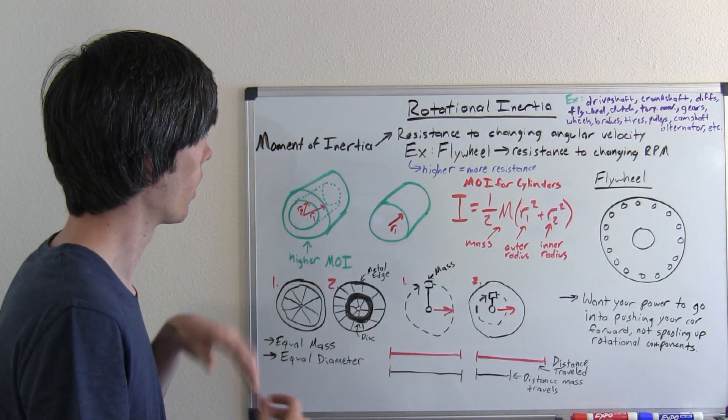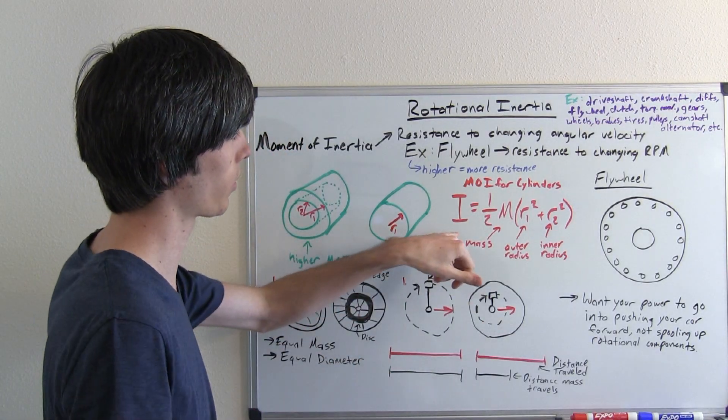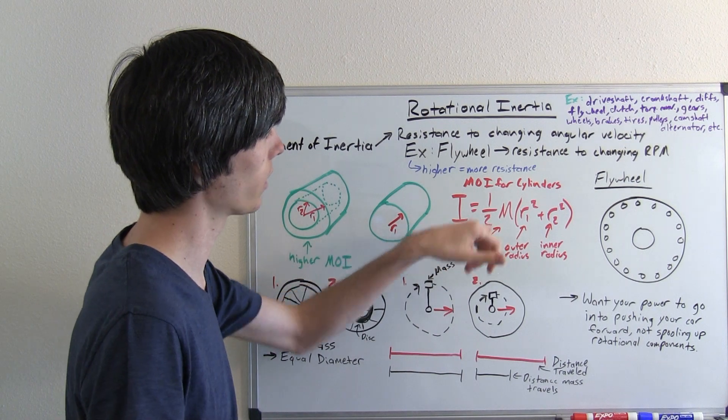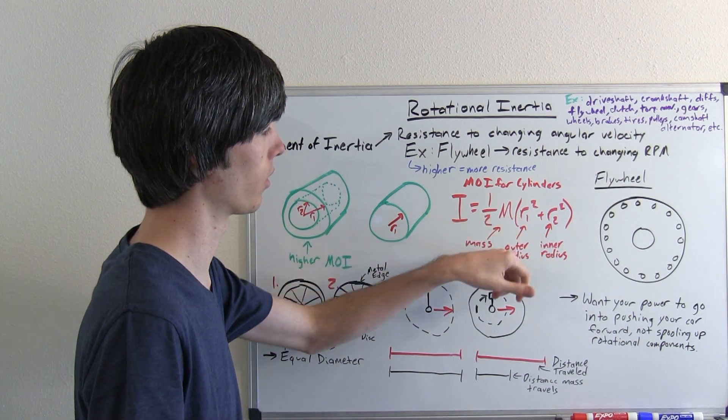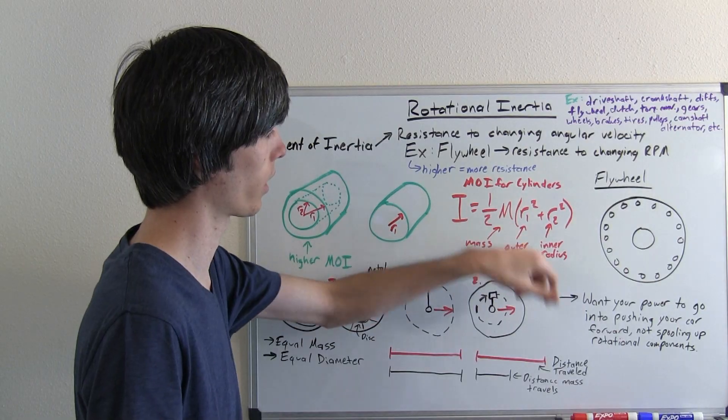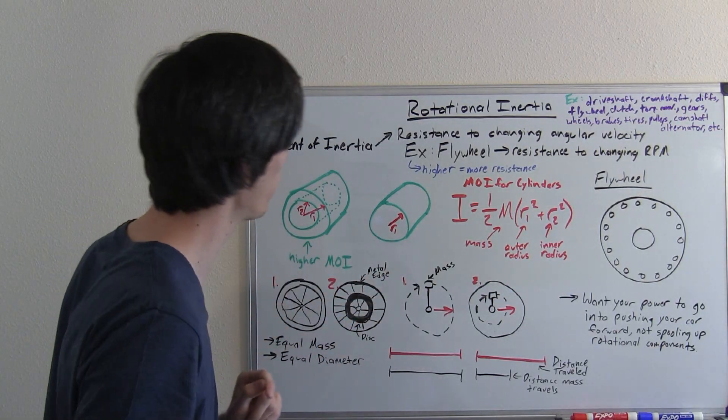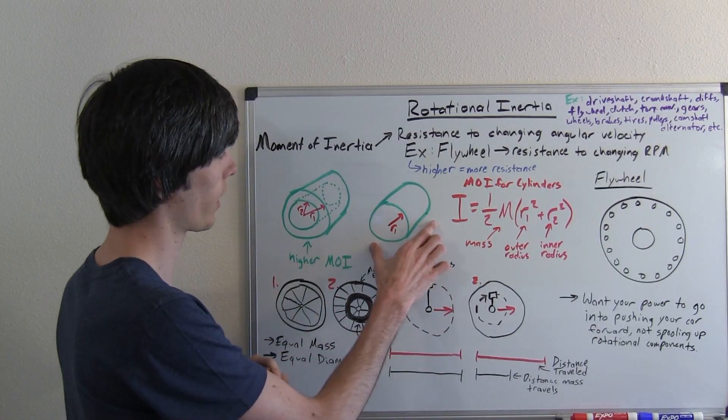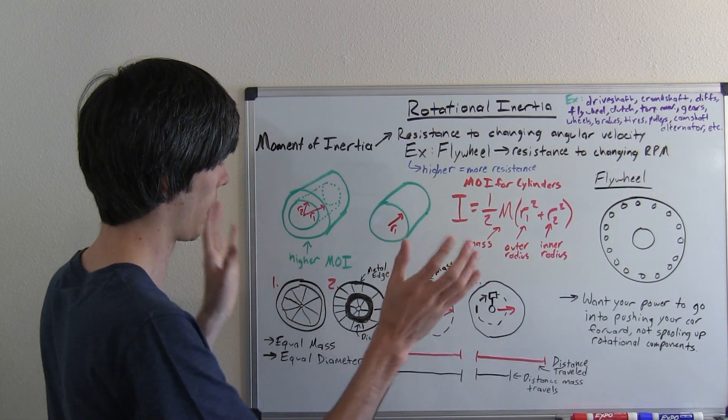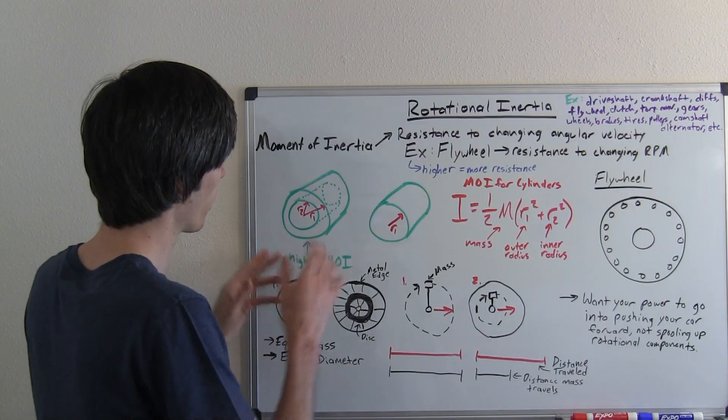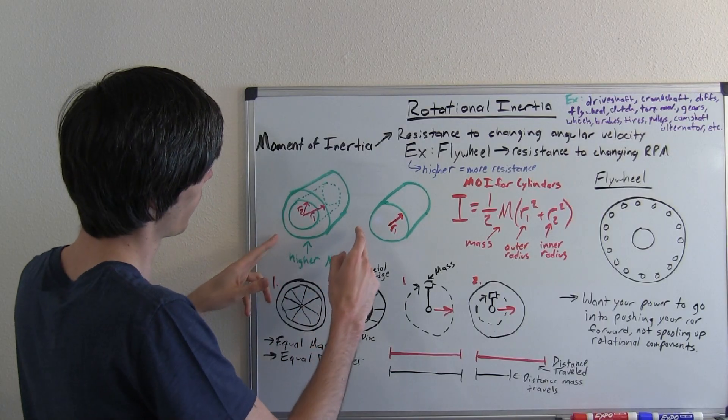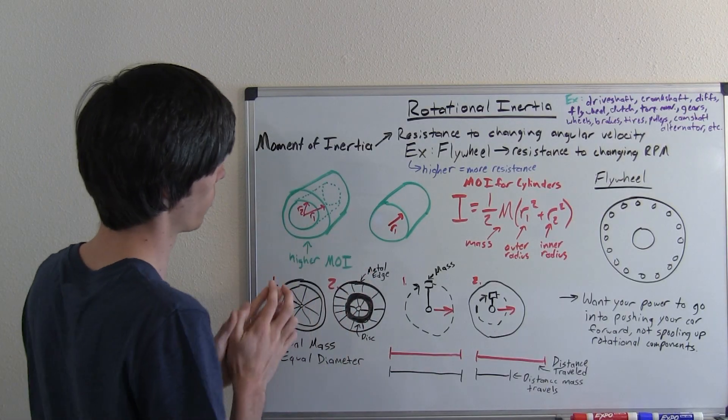The moment of inertia for a cylinder is represented by the equation I equals one half mass times the outer radius squared plus the inner radius squared. For example, we've got these two cylinders. This is a solid cylinder of mass, say 200. And this one here has that same mass, 200 whatever units.